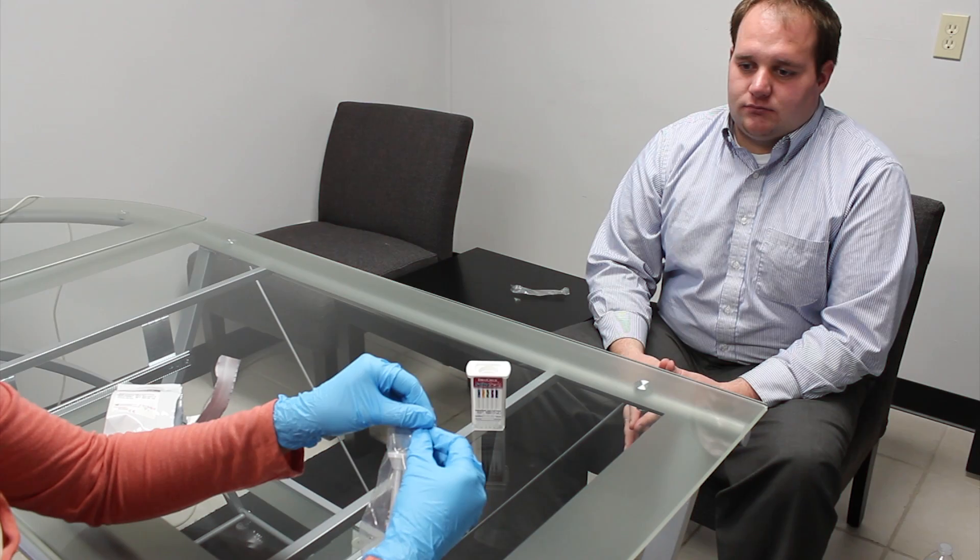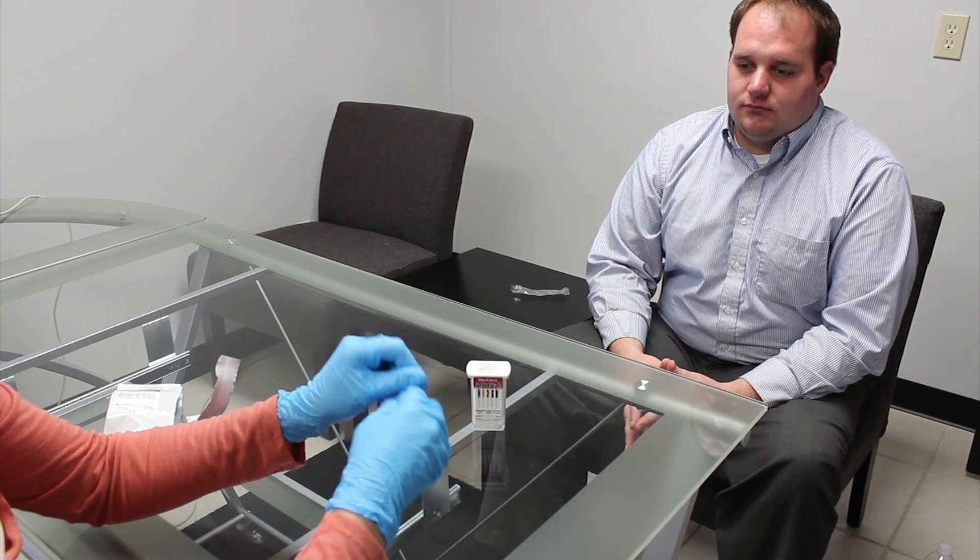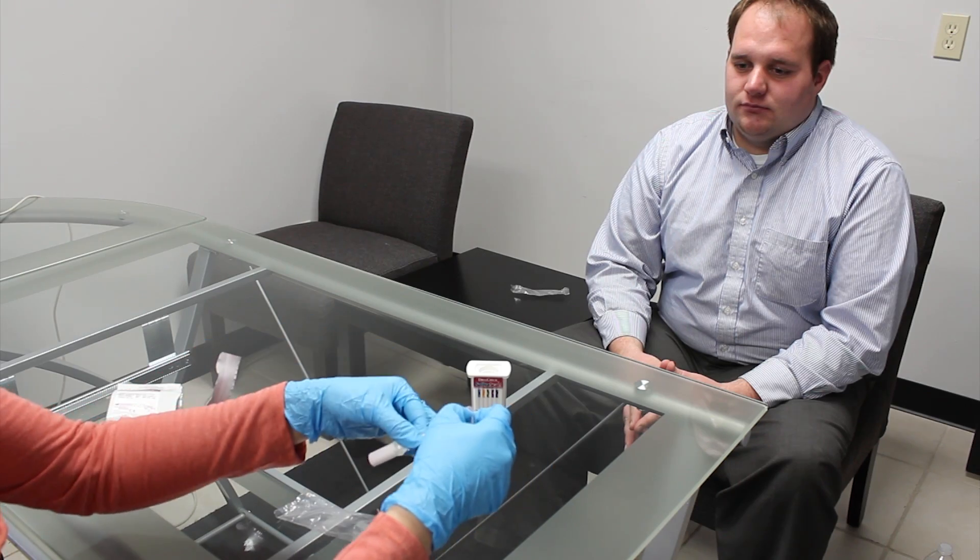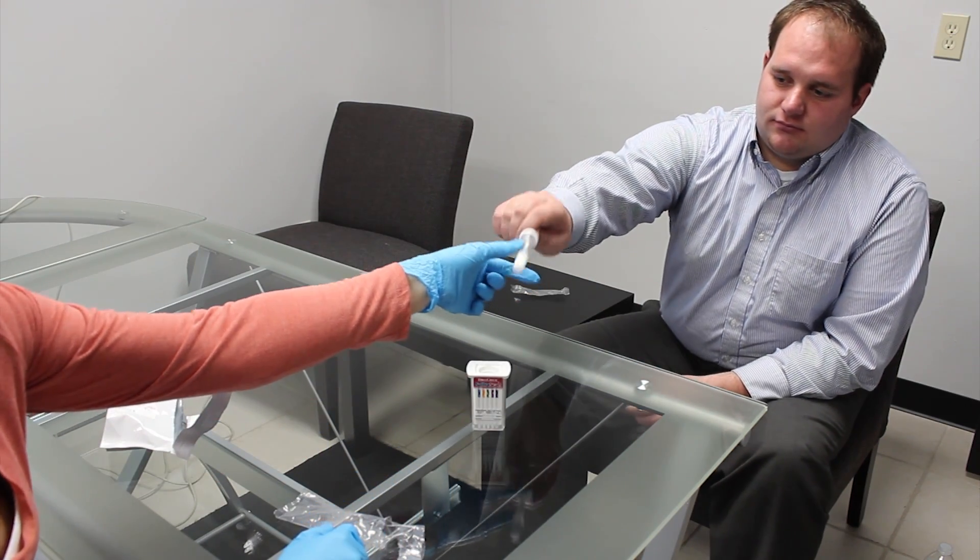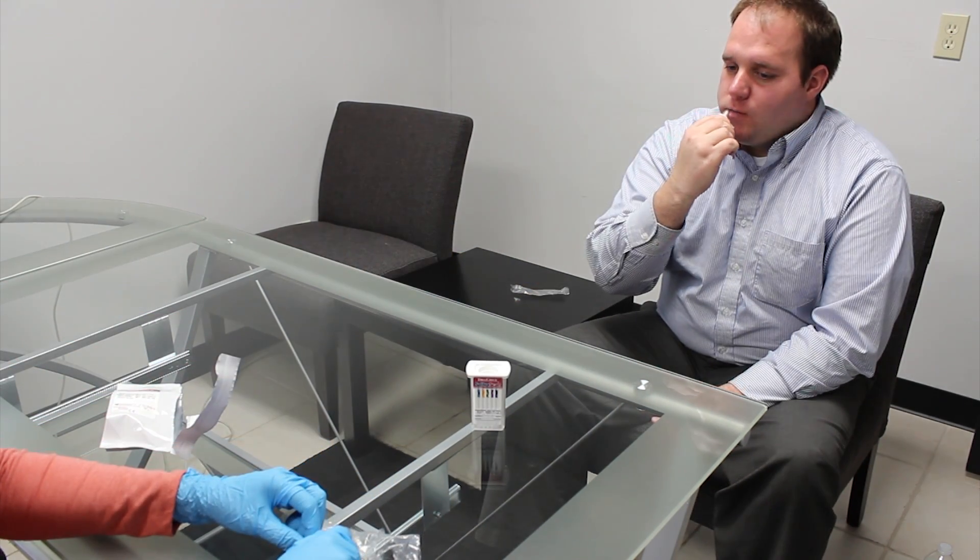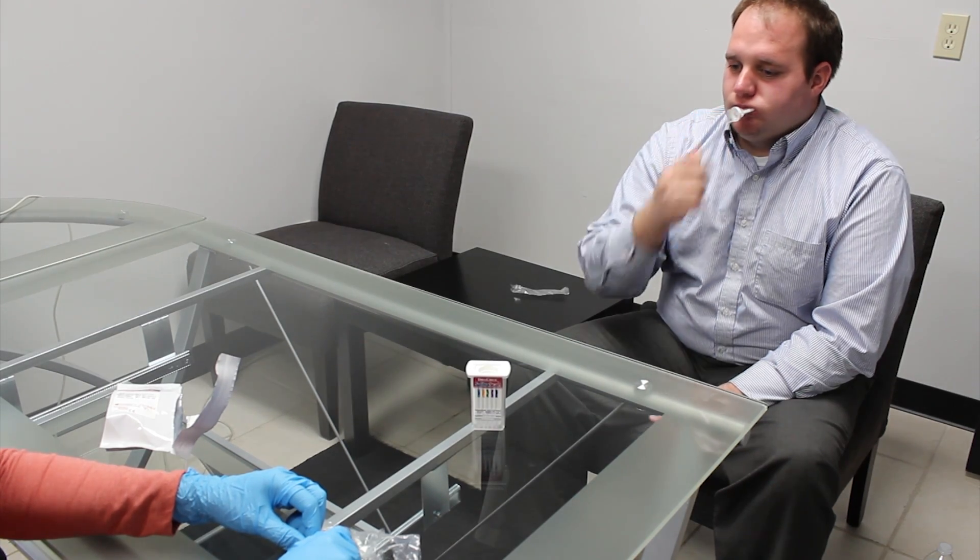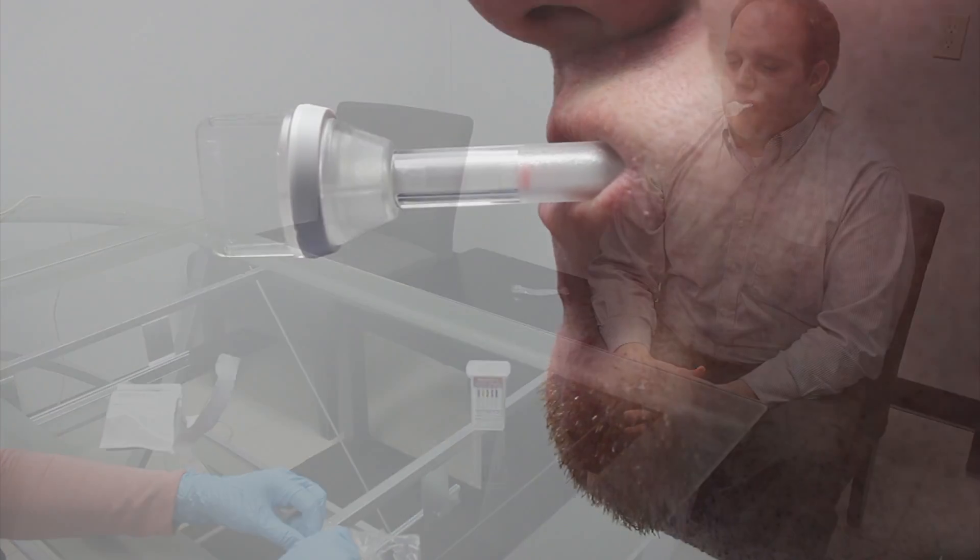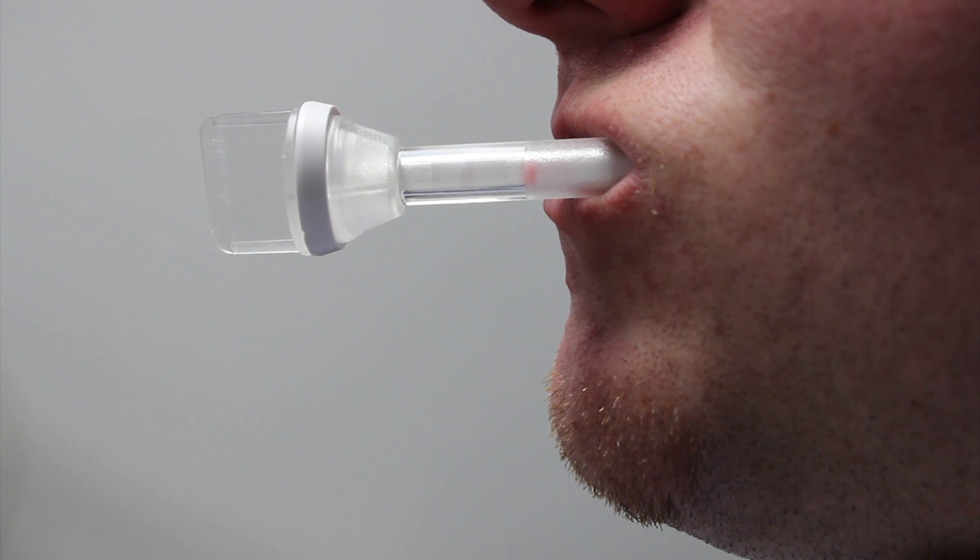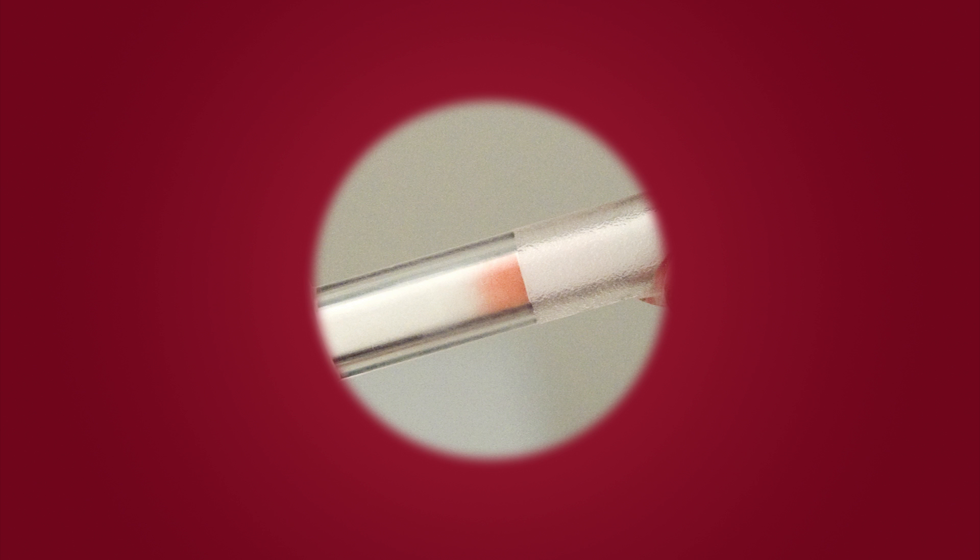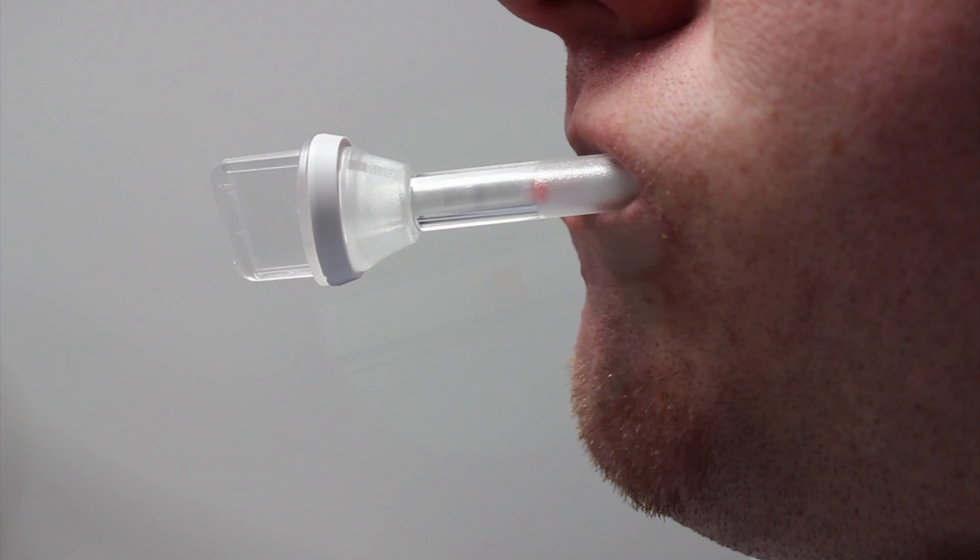Remove the collection swab from the clear pouch without touching the sponge and hand it to the donor. Using the collection swab, have the donor sweep the inside of the mouth, cheek, gums, tongue several times. Then hold the swab in the mouth until red color appears on the saturation indicator strip. The donor must leave the swab in the mouth until instructed to remove it.